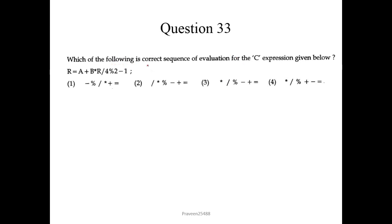Now question number 33. Which of the following is the correct sequence of evaluation for the C expression given below? So this is very simple problem. The BODMAS rule can apply here. So here it would be first multiplication, division and modulus. After that addition, subtraction and last assignment. So fourth one would be the correct answer.